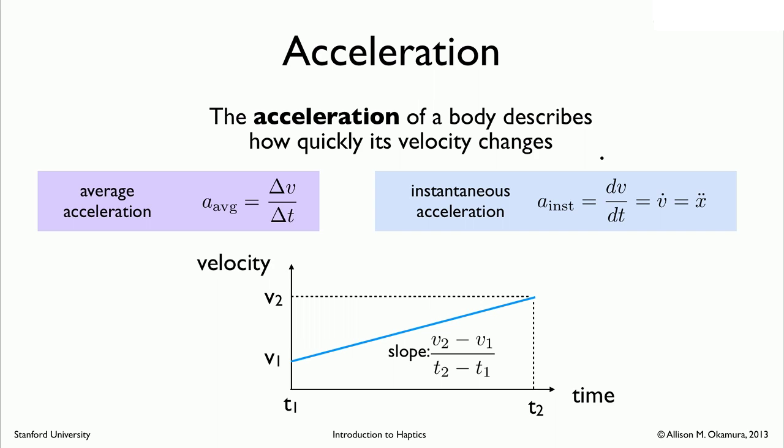Acceleration is another important concept, and that just takes the idea of velocity one step further. Now we're looking at how the acceleration of the body describes how quickly velocity changes over time. So average acceleration, instead of being delta x over t, now it's delta v over t. You can see in this case, which is important to note, is a plot of velocity versus time, the slope of that line is delta v over delta t. That gives you a measure of the average acceleration.